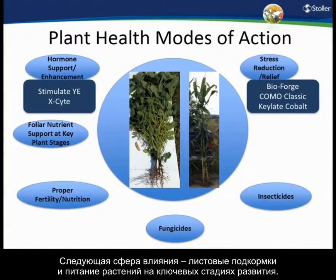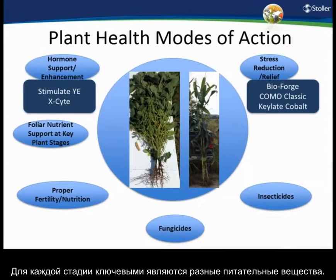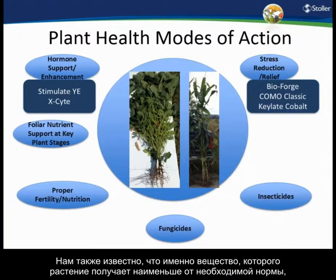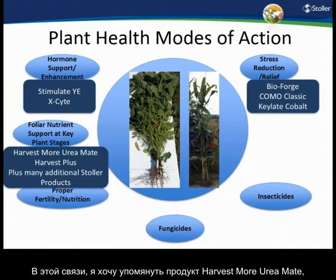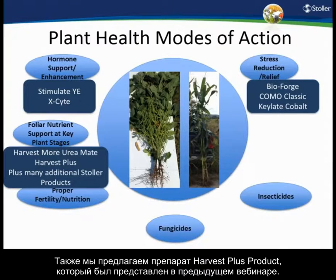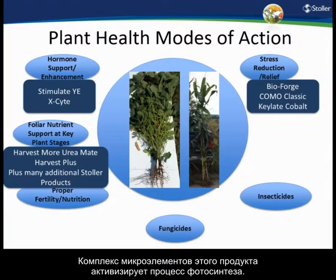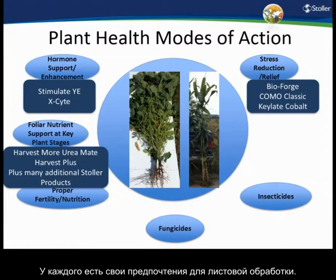For foliar nutrients and support at key plant stages, the hormone model shows what nutrients are really important to the plant at any given time. The nutrient in least availability is going to be the one that limits yield. I really like the Harvest More Urea Made product because it's a catch-all — it has N, P, and K as well as micronutrients. We also have the Harvest Plus product that drives photosynthesis within the plant more specifically.